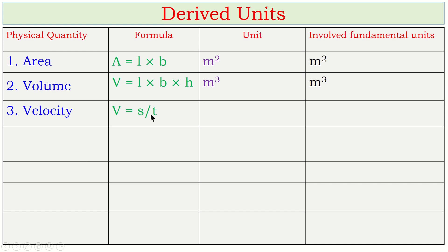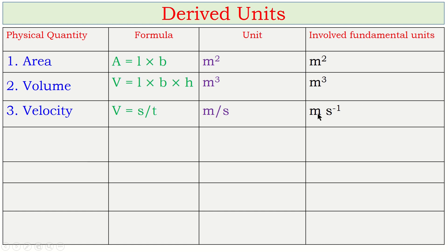Third: velocity. Velocity = displacement ÷ time. Displacement is measured in meter and time in second, so the unit is meter per second, which can also be written as m·s⁻¹ — meter divided by second. The fundamental units involved in velocity are meter and second.